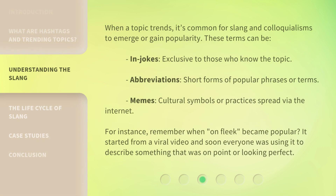When a topic trends, it's common for slang and colloquialisms to emerge or gain popularity. These terms can be in-jokes, exclusive to those who know the topic; abbreviations, short forms of popular phrases or terms; or memes, cultural symbols or practices spread via the internet. For instance, remember when "on fleek" became popular? It started from a viral video and soon everyone was using it to describe something that was on point or looking perfect.